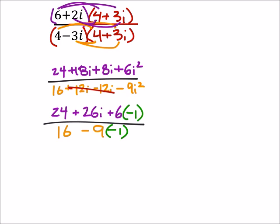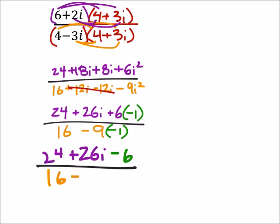In the numerator, I still got that 24 plus 26i, but that plus 6 times negative 1 is going to change to a minus 6. And this is all over 16. Now I've got a, it would be minus, but that 9 times negative 1 makes that a negative 9. So I can really just change that into a plus 9.